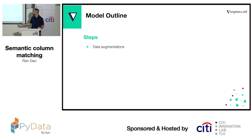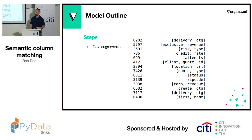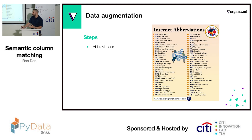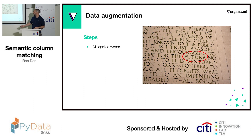Next, we used data augmentation. Here's another example — we can see the bucket IDs and all the different columns that were joined together. We can see it's not very rich, so we needed some sort of augmentation. First, we used synonyms — we added random synonyms into our sentences. Next, we used abbreviations: we took a dictionary of abbreviations and also created random ones by dropping the vowels. And then we created misspelled words for our spell checker.